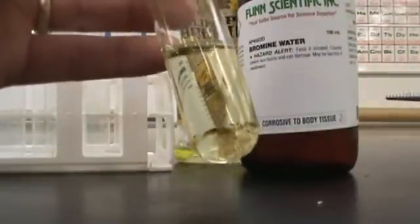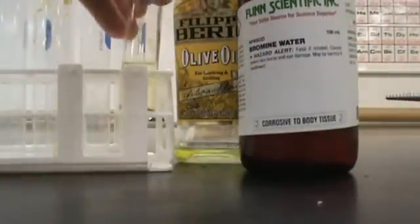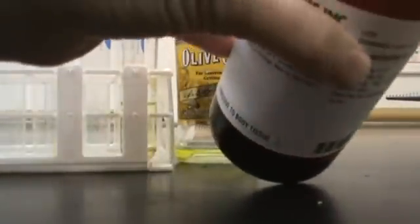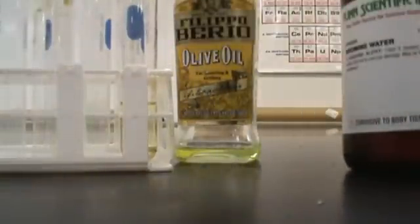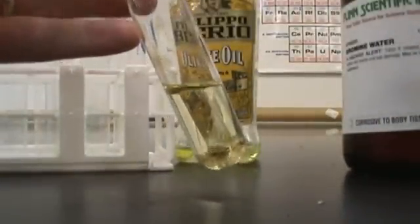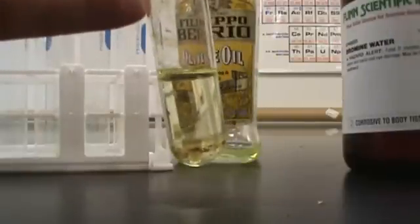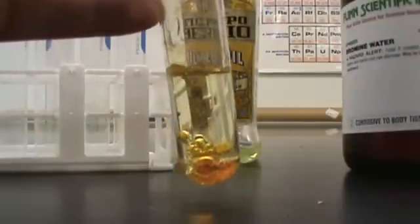So bromine will react with the double bond in an alkene without any catalyst. What I can do is take some bromine water which has bromine in it and add it to this, and if there's unsaturation in this then automatically that bromine should react with it and you'll see that color disappear.